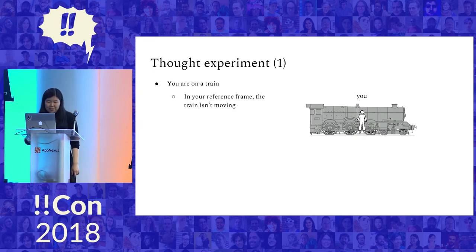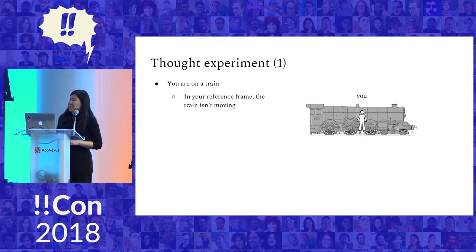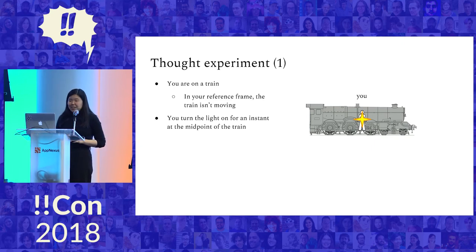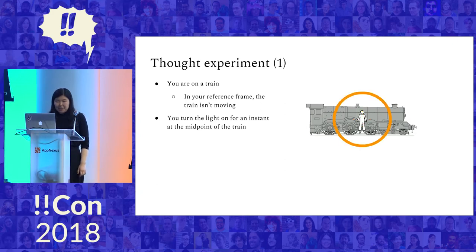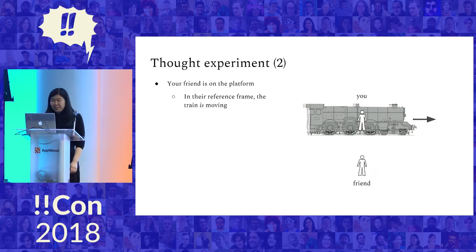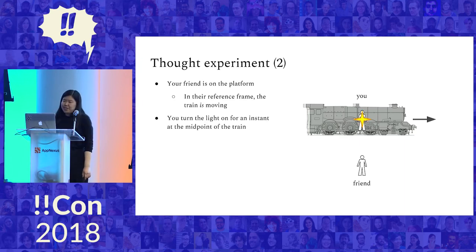I have a little thought experiment. For basically historical reasons, every thought experiment about special relativity has to involve at least one train — so I hope you guys like trains. You're on a train; in your reference frame the train isn't moving. Let's say you turn a flashlight on for just an instant at the exact midpoint of the train. A spherical wave front of light expands outward symmetrically, fills up the entire train, and the light reaches the front and the back of the train at the same time. Now let's look at this from your friend's perspective on the platform — from their reference frame the train is moving, but it's the same physical setup, so you turn the flashlight on again at the midpoint of the train.